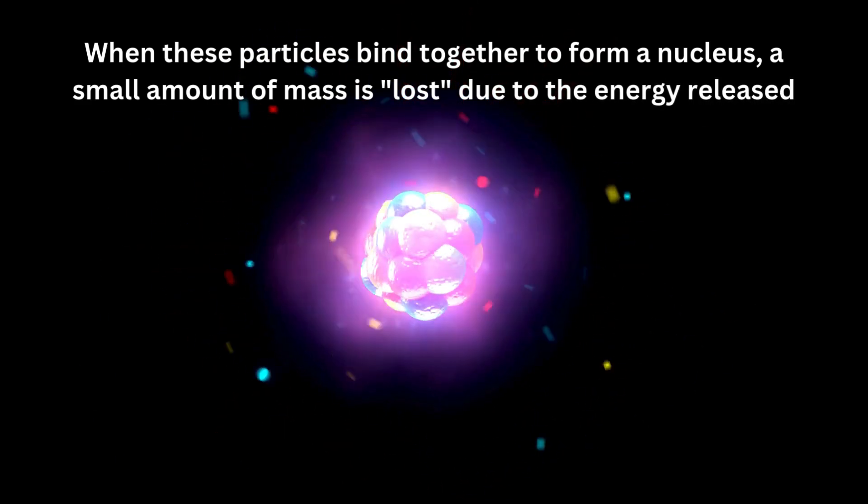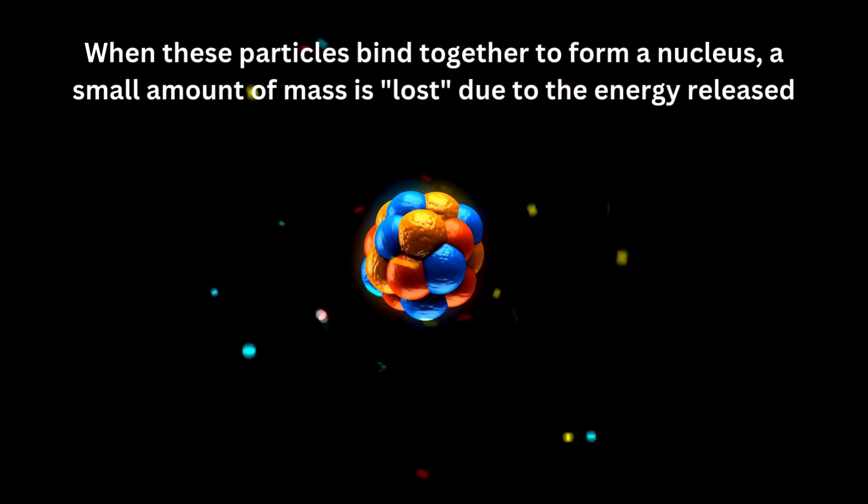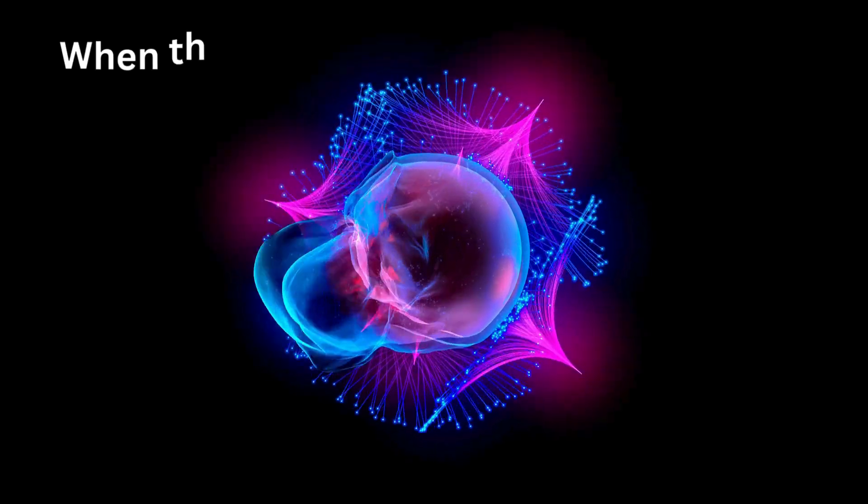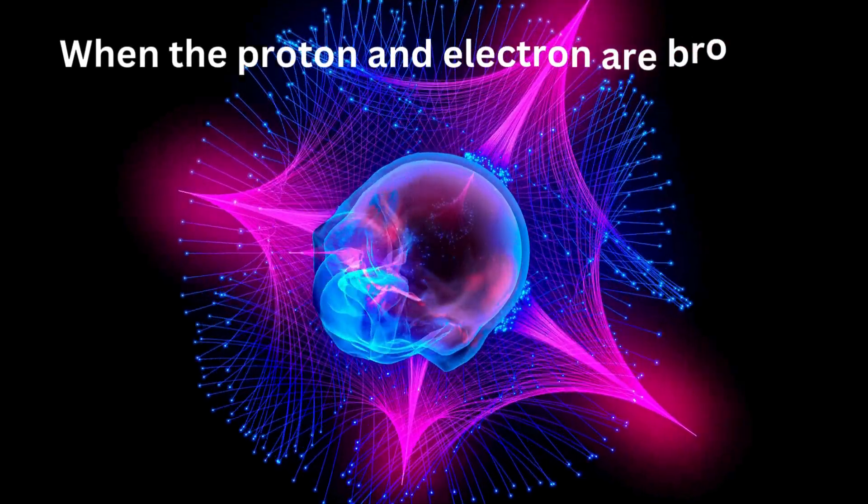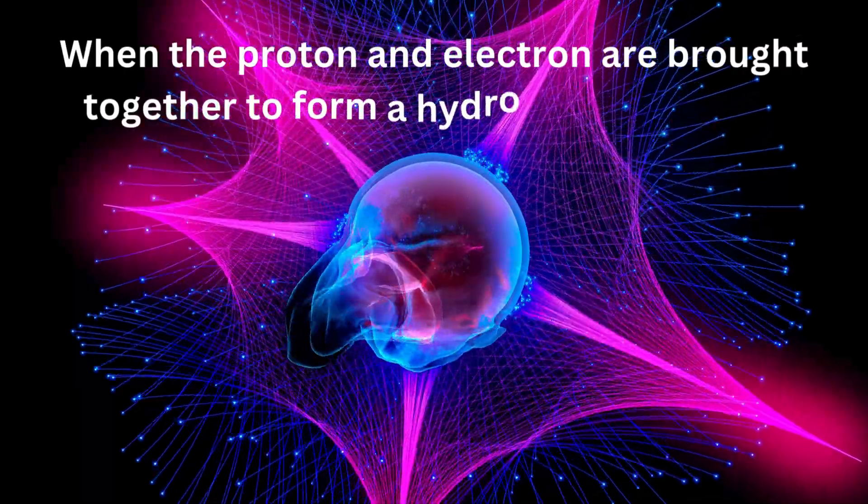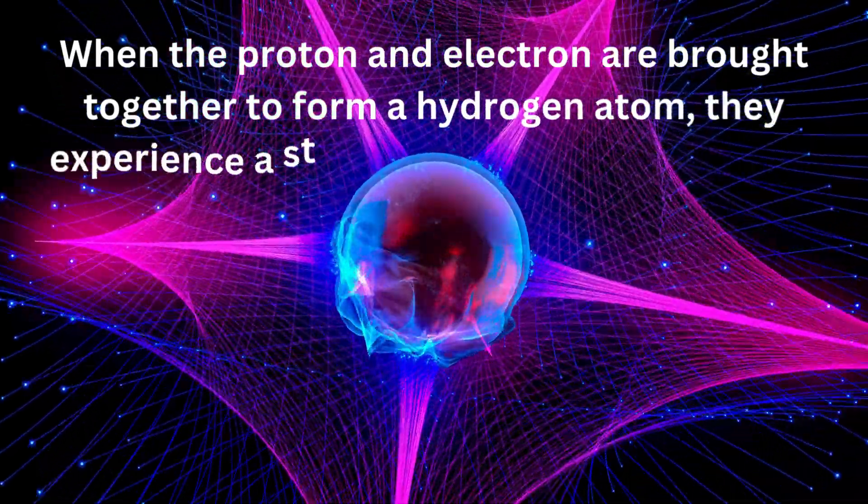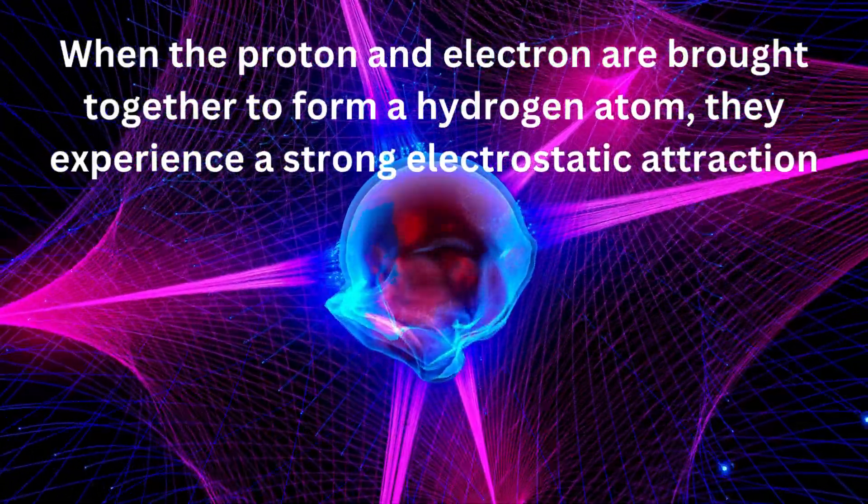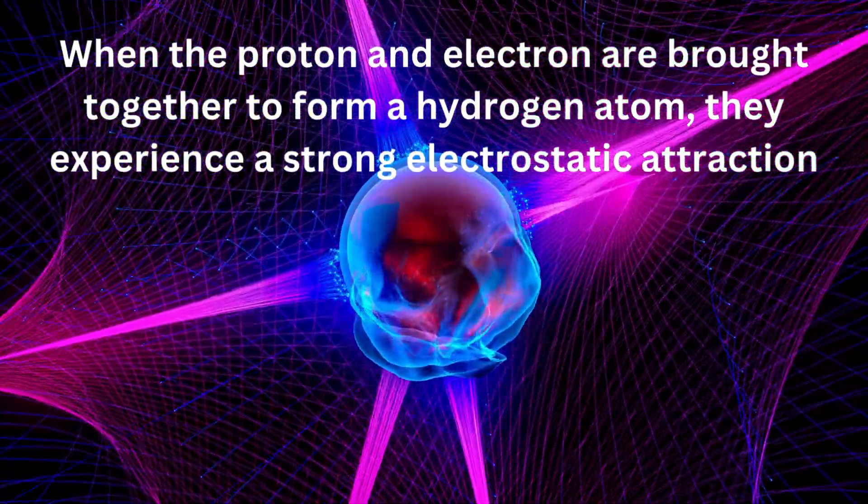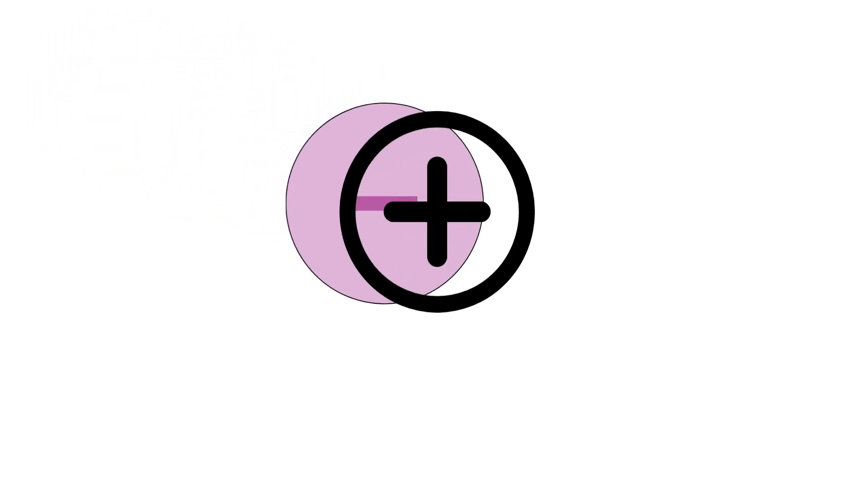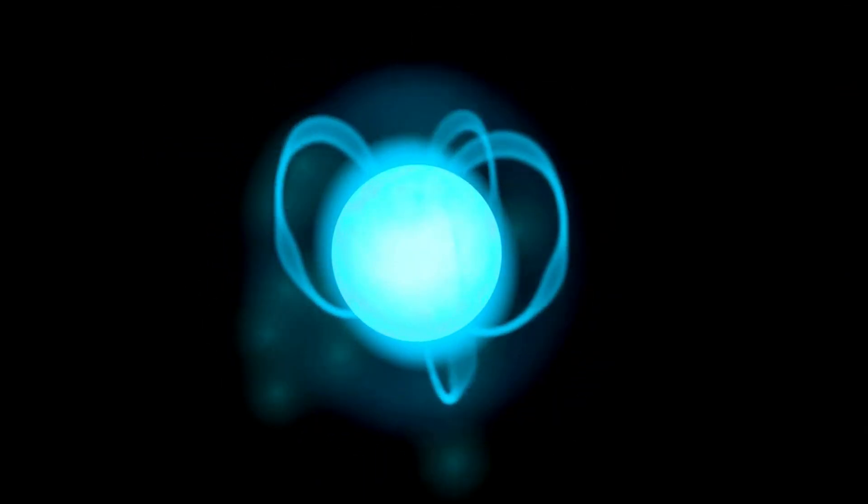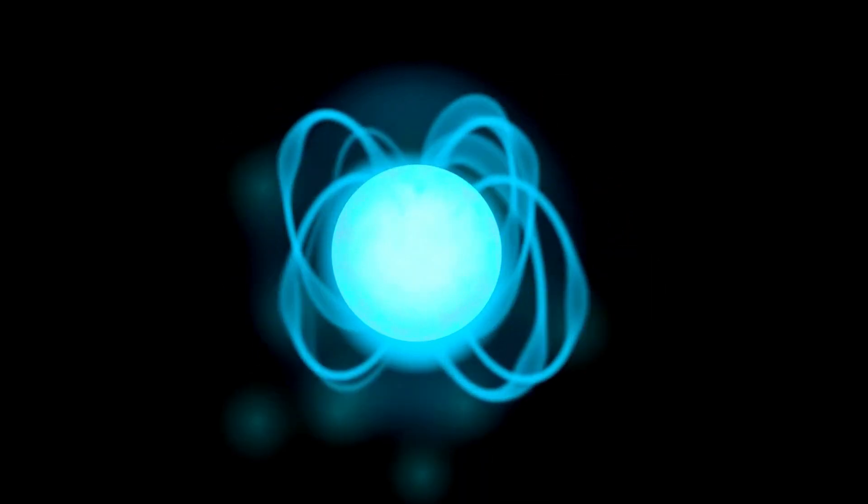This discrepancy can be explained by the concept of potential energy. When the proton and electron are brought together to form a hydrogen atom, they experience a strong electrostatic attraction. This attraction lowers the potential energy of the system. Here's the key. As the electron orbits the proton, it's in a lower potential energy state than when they're separate. This drop in potential energy is crucial.